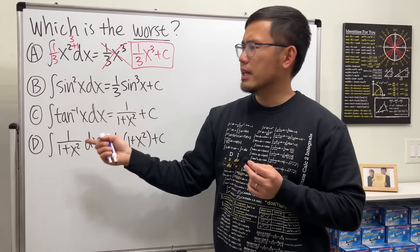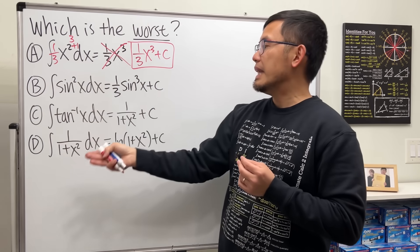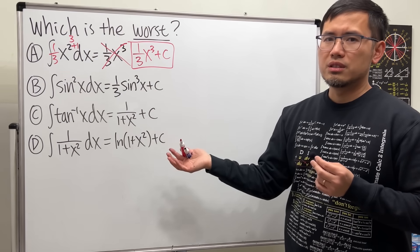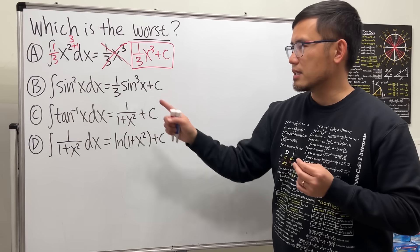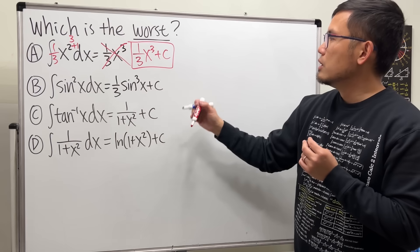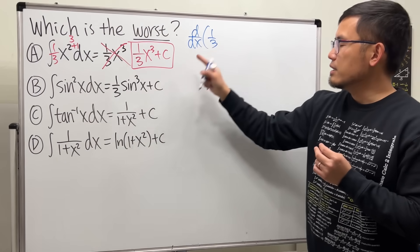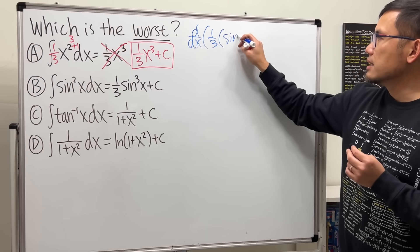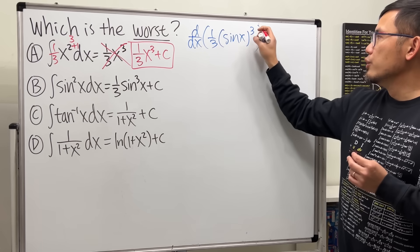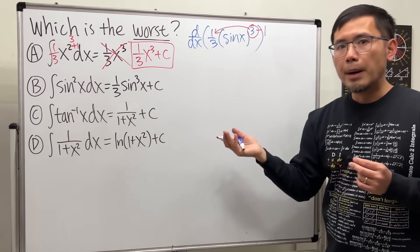Now let's try the next one. We have the integral of sin²x. Someone might think: we have the second power, so just add one to get three and divide by the power, giving one third sin³x. But what's wrong with this? Let me convince you it's wrong by taking the derivative.